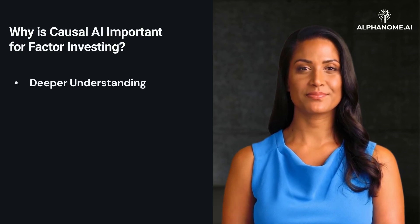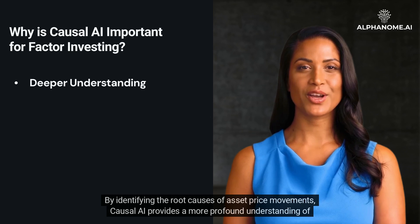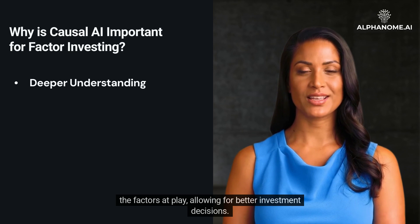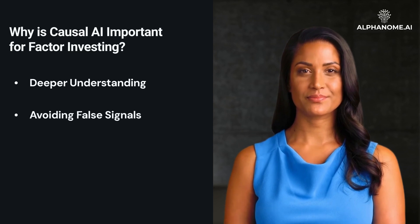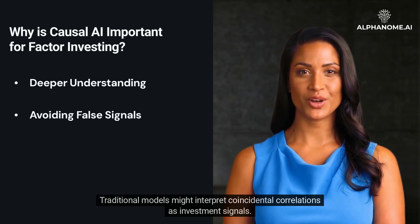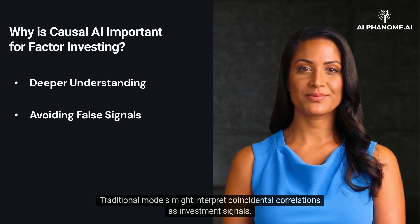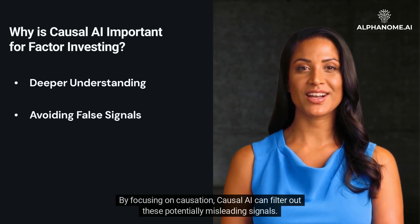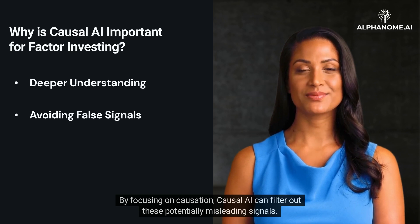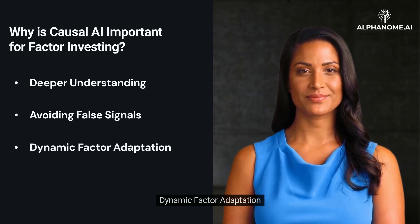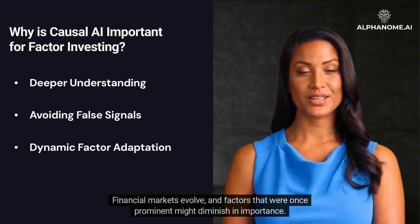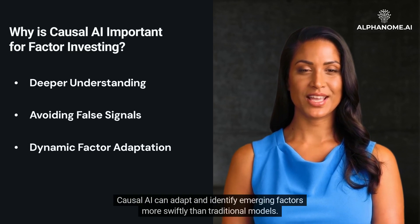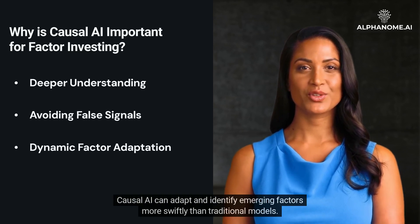By identifying the root causes of asset price movements, causal AI provides a more profound understanding of the factors at play, allowing for better investment decisions. Avoiding false signals: Traditional models might interpret coincidental correlations as investment signals. By focusing on causation, causal AI can filter out these potentially misleading signals. Dynamic Factor Adaptation: Financial markets evolve, and factors that were once prominent might diminish in importance. Causal AI can adapt and identify emerging factors more swiftly than traditional models.